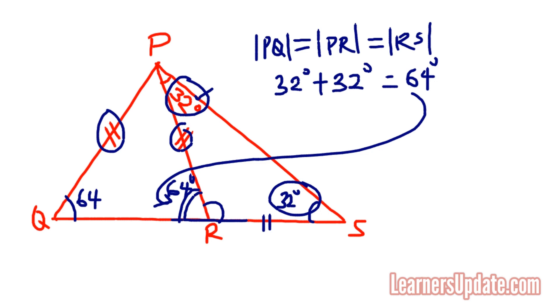So our work is almost done. If here is 64 and here is 64, we need to find this angle. That angle is the angle we were originally taught to find, which is angle QPR, and we can find that by doing 180 minus...